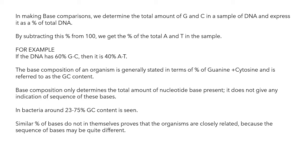When you get a percentage for GC, simply subtract that from 100 and you will get the percentage for AT (adenine and thymine). The base composition of an organism is generally stated in terms of percent of guanine plus cytosine and is referred to as GC content.